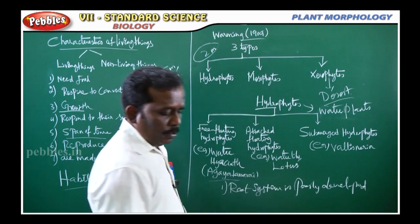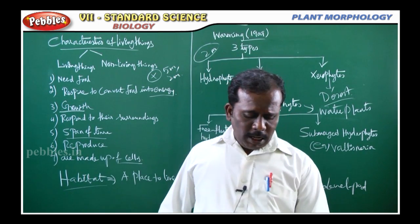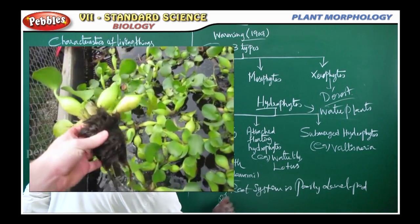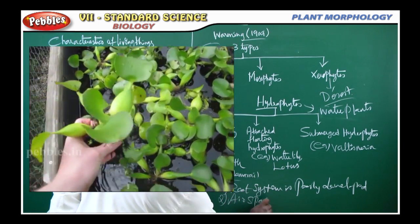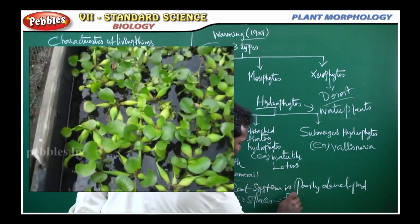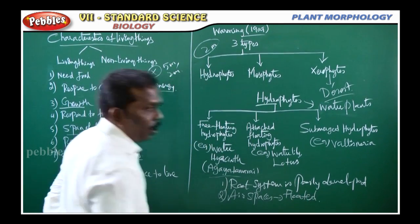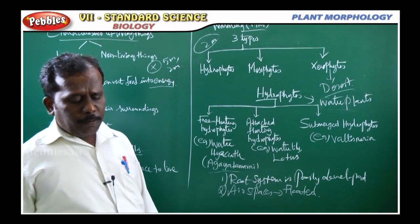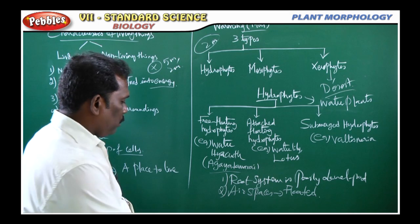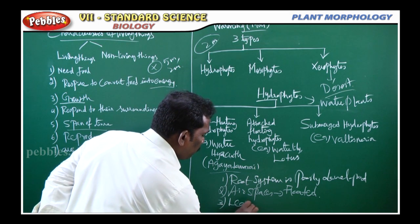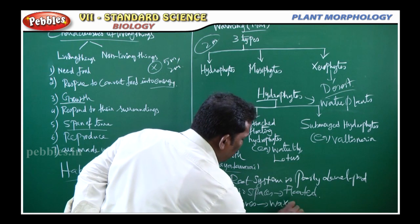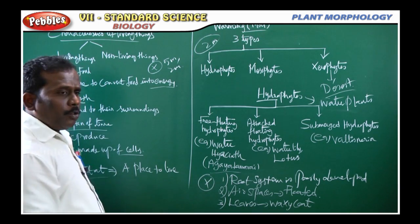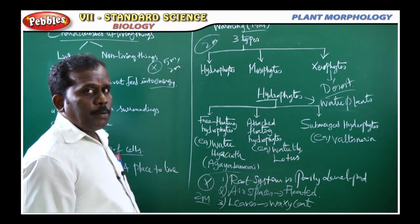Second point: the stem is thick, short, and spongy with air spaces. These air spaces allow the plant to float in water. Third point: the leaves have a waxy coat that prevents their decay in excess water. These are the adaptations of hydrophytes.